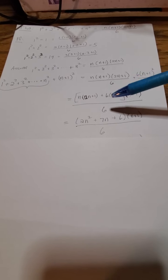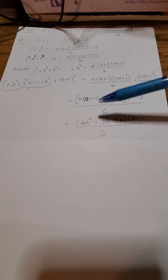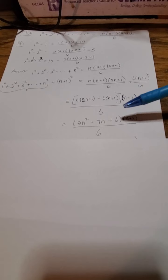Which if I just work out the parentheses here, multiply out the parentheses, I get 2n squared plus 7n plus 6 times n plus 1 over 6.